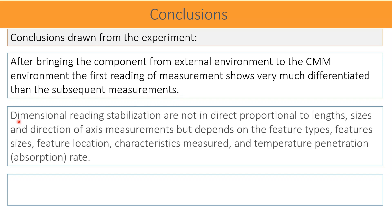Dimensional reading stabilization is not directly proportional to the length, size, and direction of axis measurement, but depends on the feature types, feature sizes, feature locations with the datum, characteristics measured, and temperature penetration or absorption rate.